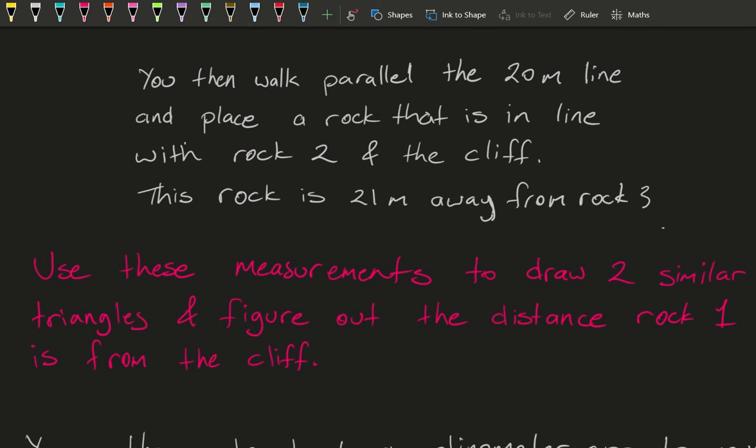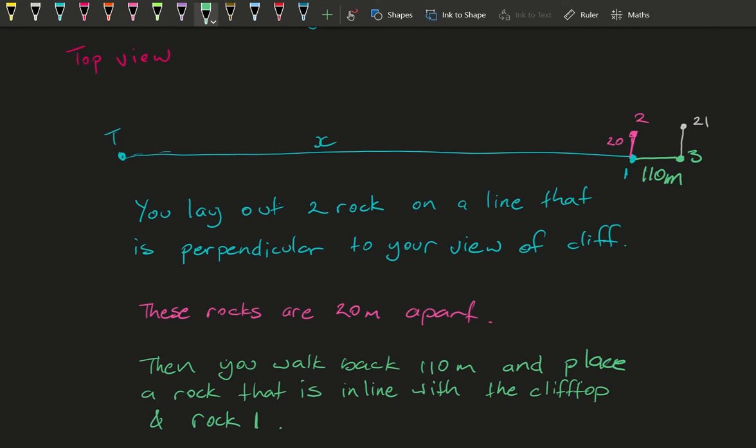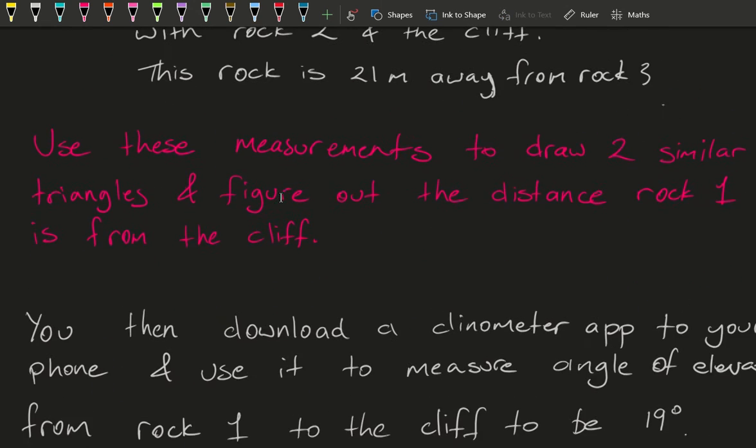So you're going to use these measurements to draw two similar triangles and figure out the distance that rock one is from the cliff. So you're going to figure out using these two and these two as parallel, their distance all the way back to here. So you're going to draw some similar triangles.